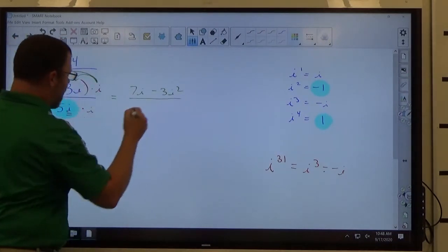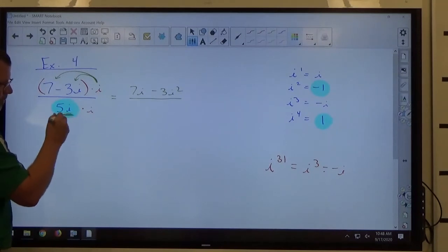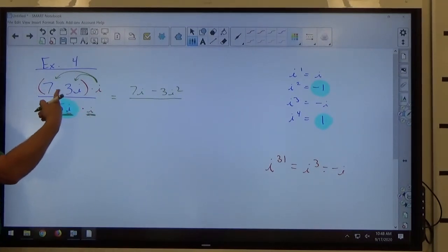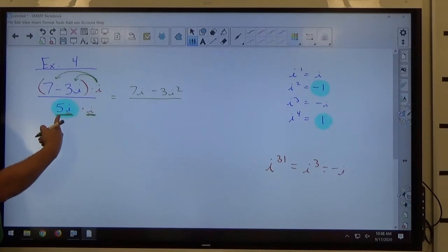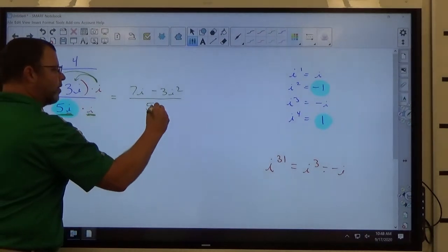On the bottom, I have a single object 5i times a single object i. When you have pluses and minuses, you have multiple objects. When there's no pluses and minuses, you have single objects. So single object 5i times single object i, 5 is just a number, i times i makes i squared.